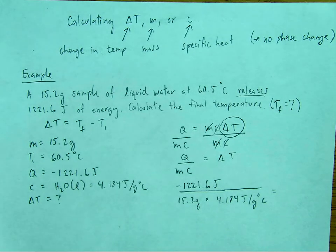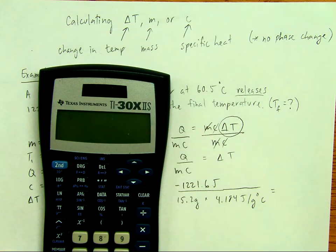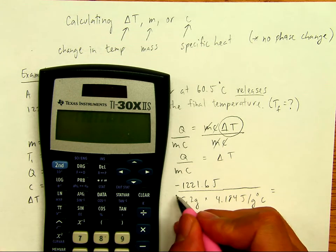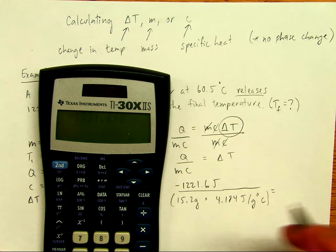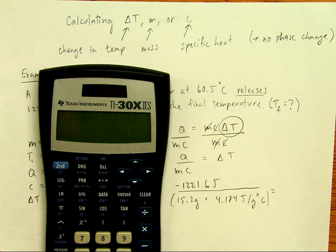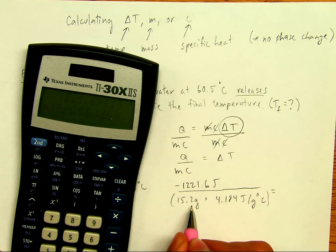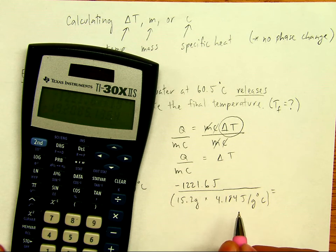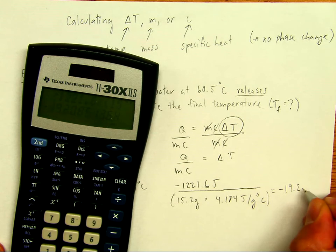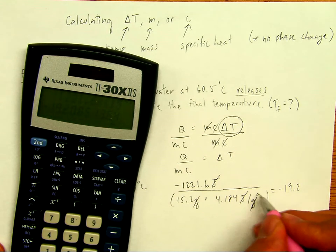So when I plug this in, what I like to do is negative 1,221.6 divide it. So I'm going to group this on the bottom. So I'm going to say open, 15.2 times 4.184, close, enter. Since my mass is 3 sig fig, I'm going to keep all of this to 3 sig figs. The answer is negative 19.2. My joules will cancel, my grams will cancel, and I'm left with just degrees Celsius.